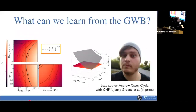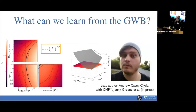What Andrew found is that for this signal in the NANOGrav 12-and-a-half-year data of about 2 times 10 to the minus 15, the number density of sources is about 6.6 times 10 to the minus 6 black hole binaries per megaparsec cubed — and that number is five times larger than what was previously expected. So either there are a lot more black hole binary systems contributing to the gravitational wave background, or there's another signal sourcing it in addition to supermassive black holes.